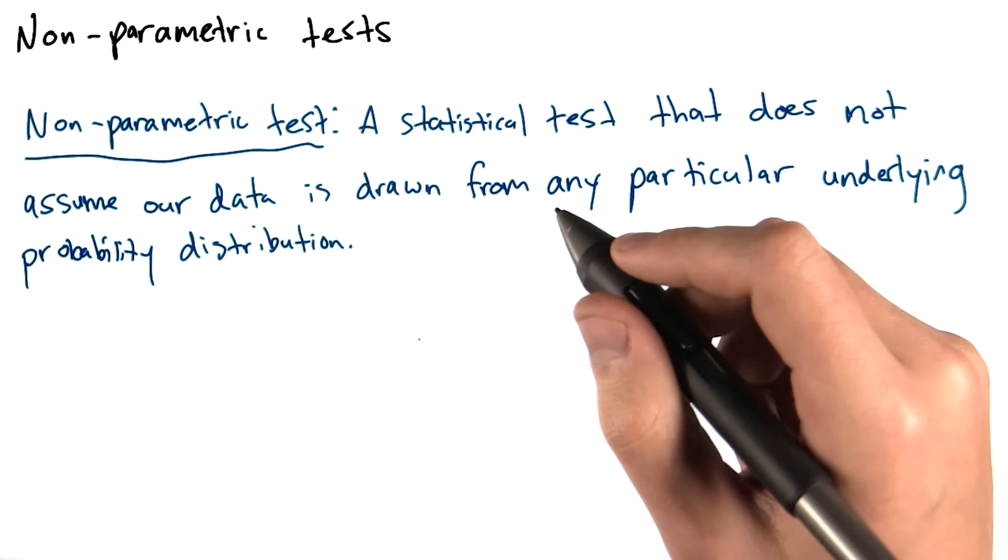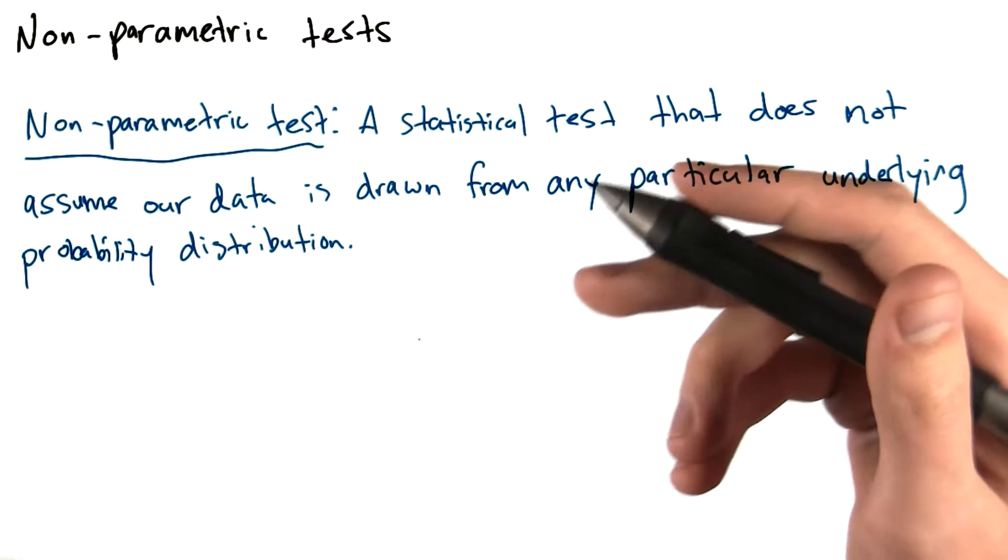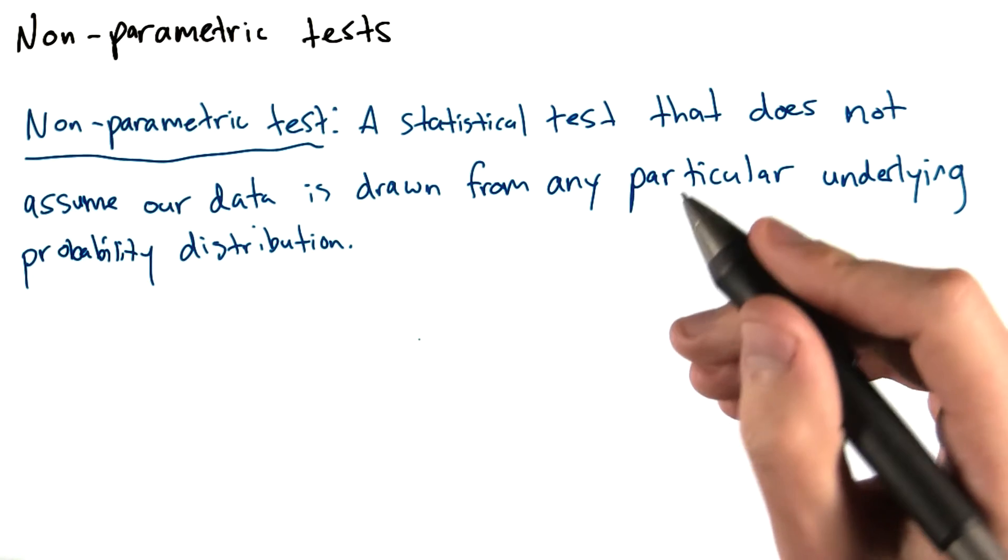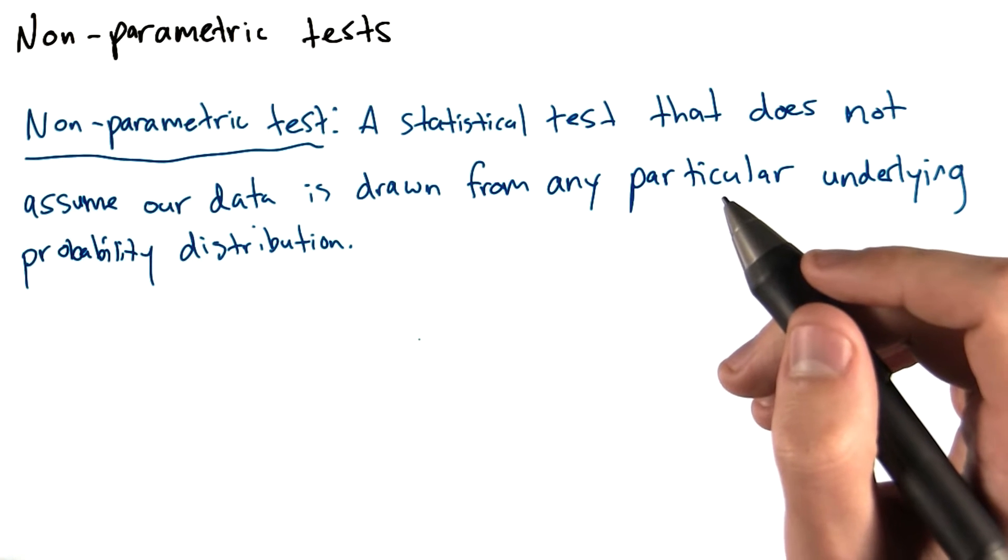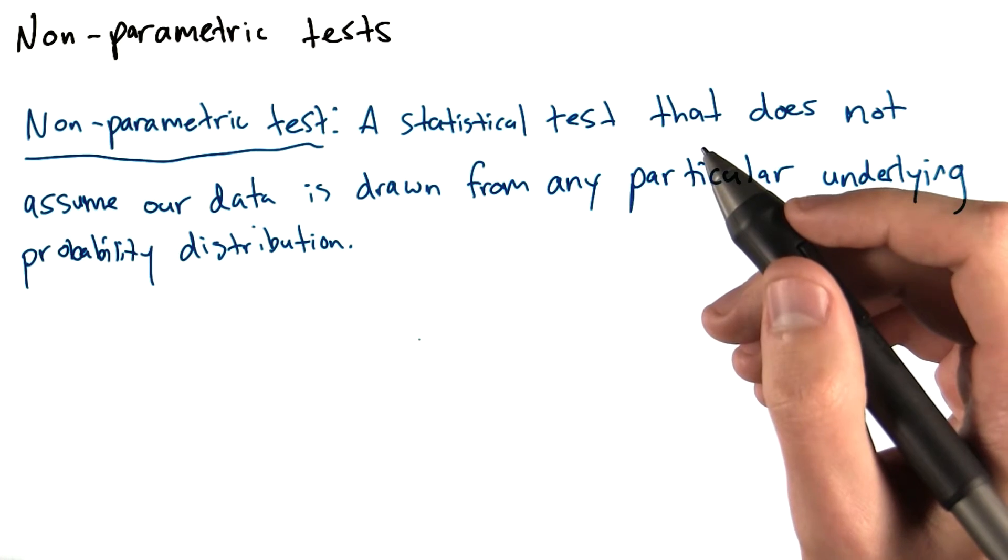First off, there's some math that says if we have enough data, a large enough sample size, we can actually use tests that assume normality, for example the t-test, even when our data is not normal.